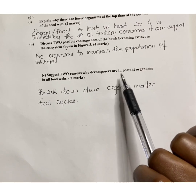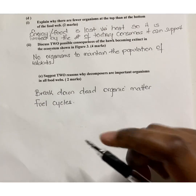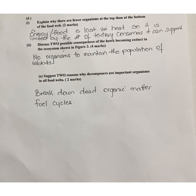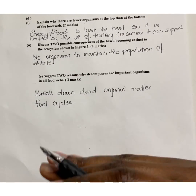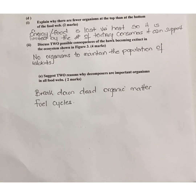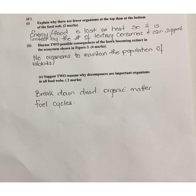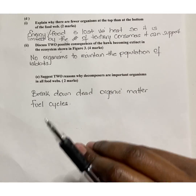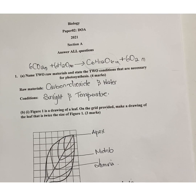Part f: Suggest two reasons why decomposers are important organisms in all food webs. Decomposers are organisms that break down dead organic matter. When they do this, they release inorganic materials that were fixed into organic materials, which are reintroduced to the environment. Plants can then use these inorganic materials during the process of assimilation, and the materials return to ecosystem cycles like the nitrogen cycle. In doing this, decomposers keep the environment clean by removing dead and decaying plants and animals. Thank you so much for watching — stay tuned for questions four and five.